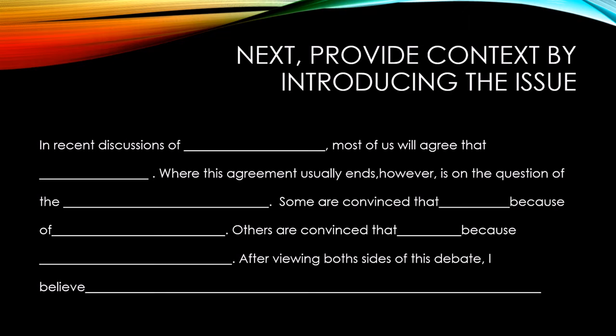Here's a quick example of how the first template might work: 'In recent discussions of climate change, most of us will agree that something needs to be done. Where this agreement usually ends, however, is on the question of the Paris Agreement. Some are convinced that the United States should be part of the Paris Agreement because of...' — and then you give your reasons. 'Others are convinced that the United States should not be part of the Paris Agreement because...' — and you provide forecasting reasons. 'After viewing both sides of this debate, I believe the United States should or should not be part of the Paris Agreement.' You can see how the template helps frame your own thinking and the direction of your paper.